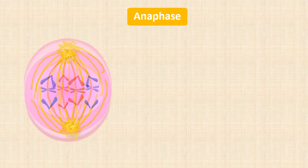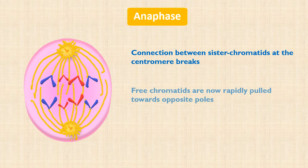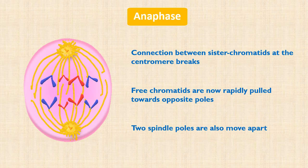We know that the sister chromatids of each chromosome are connected to each other at the centromere. Anaphase begins when this connection at the centromere breaks. Once separated, the sister chromatids are free and are rapidly pulled towards opposite poles by kinetochore microtubules. Now, each separated sister chromatid is an individual chromosome. So in anaphase we have eight daughter chromosomes. Another point to note is that during chromosome movement in anaphase, the centromere of each chromosome is towards the pole and the arms of the chromosome trail behind. Besides the movement of daughter chromosomes towards opposite poles, the two poles of the spindle are also pushed and pulled farther apart. When anaphase is complete, two complete sets of chromosomes are fully separated.